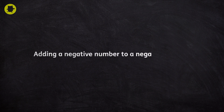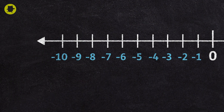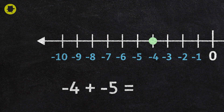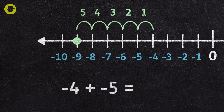To add a negative number to a negative number, we count back the value of one of the negative numbers. So to find out the answer to negative four add negative five, we mark negative four on the number line. To add negative five, we move five places in the negative direction, to the left of the number line. Negative four add negative five is negative nine.